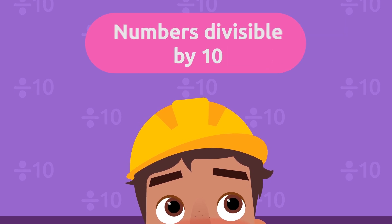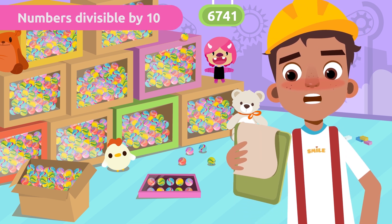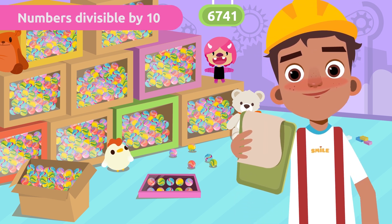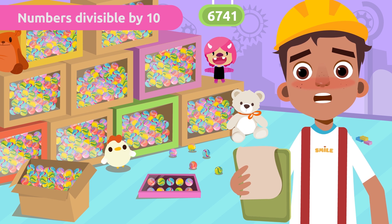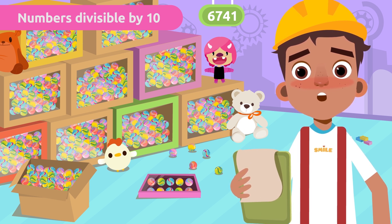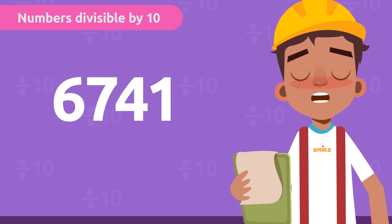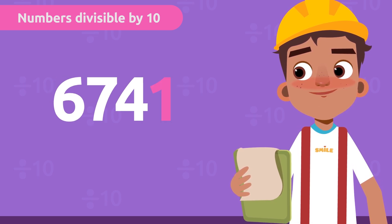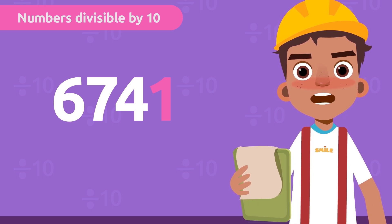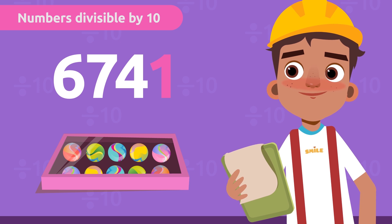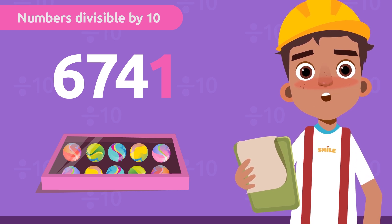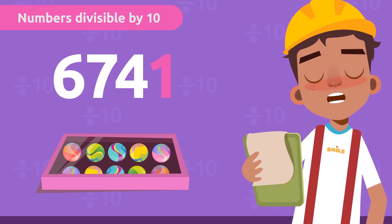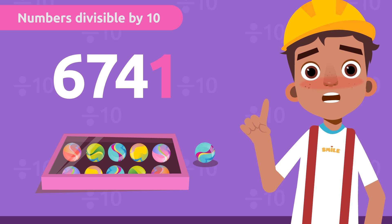Numbers divisible by ten. We have 6741 marbles. We're putting ten in each box. Now we need to know the divisibility rule for the number ten, so that there are no marbles left over. This is much easier — we just have to check if the number we want to divide ends in zero. There will be marbles left over because the number 6741 is not divisible by ten. Can you guess how many we will have left over? There will be one left over!